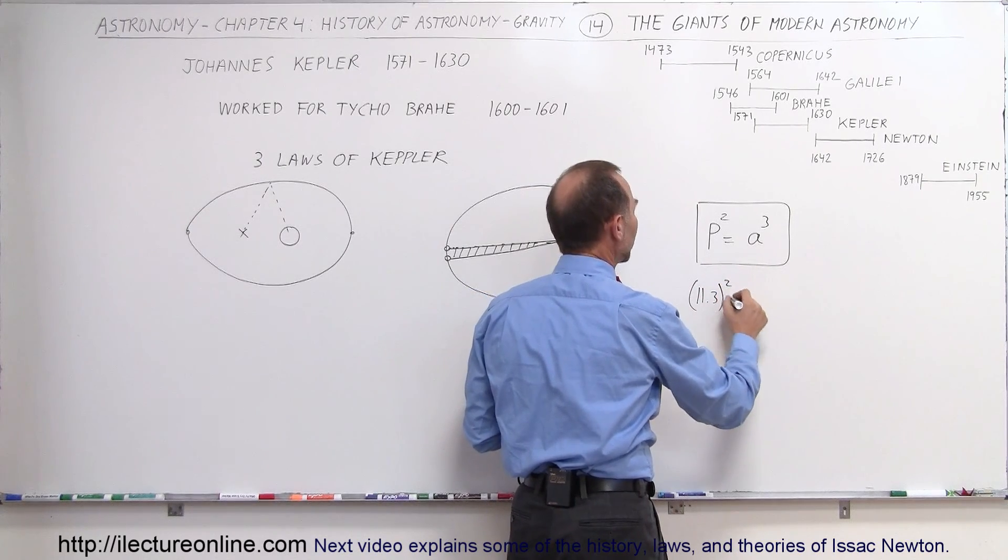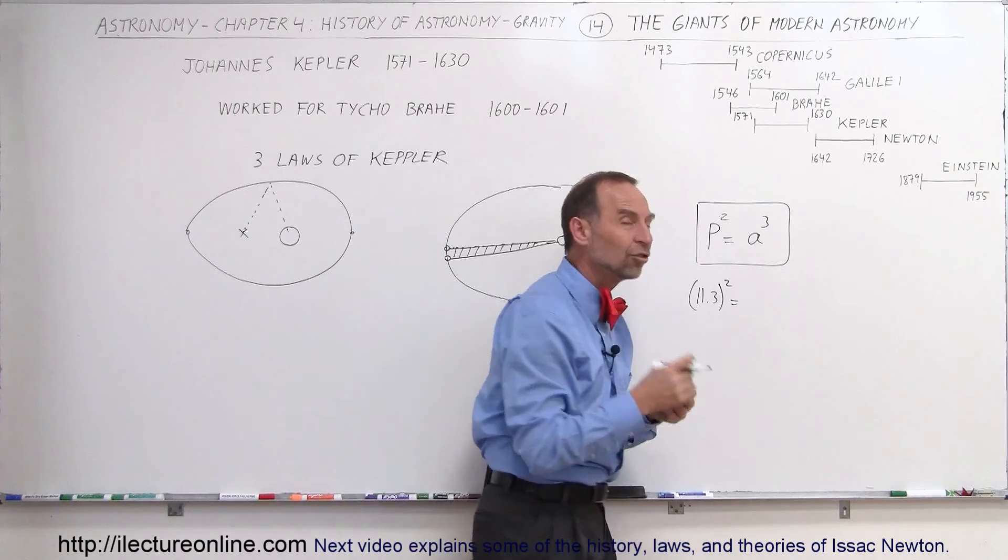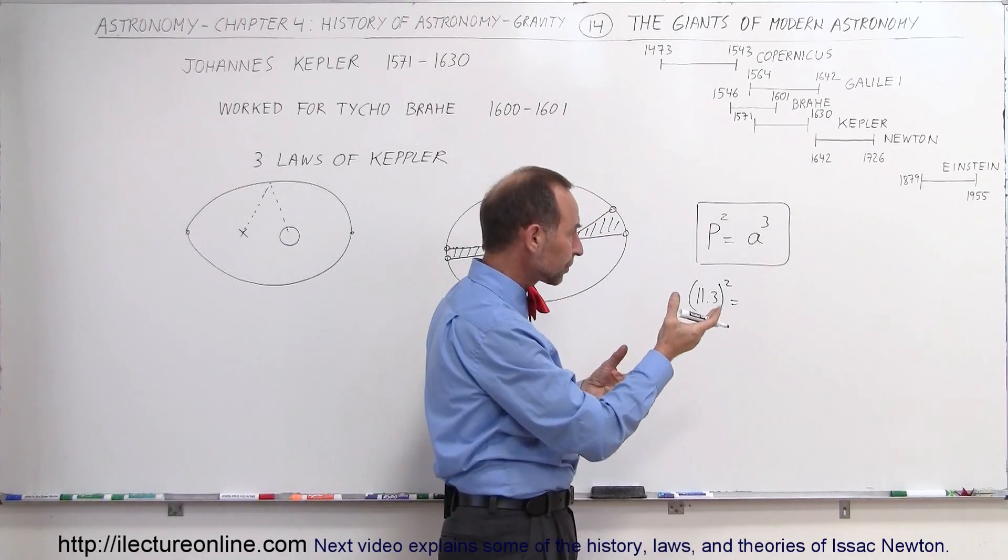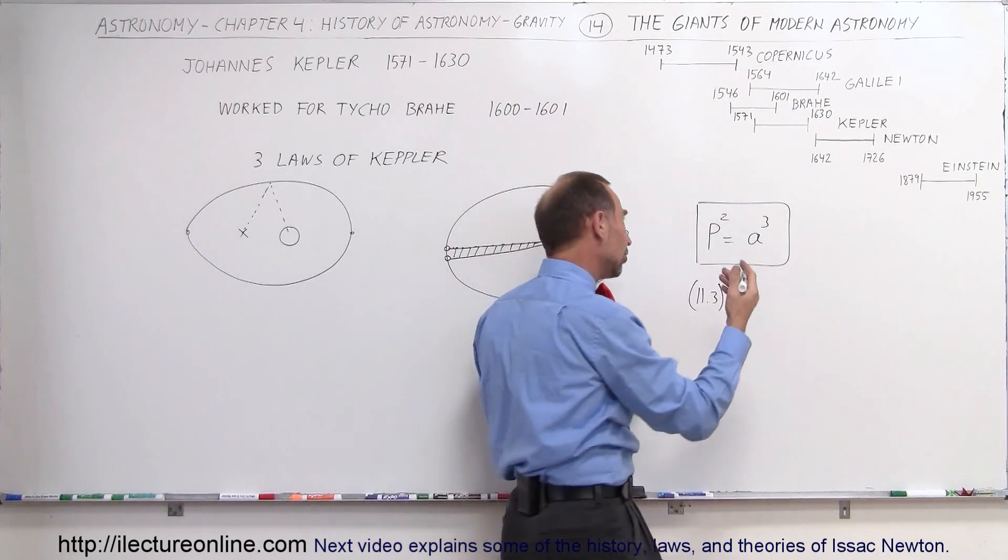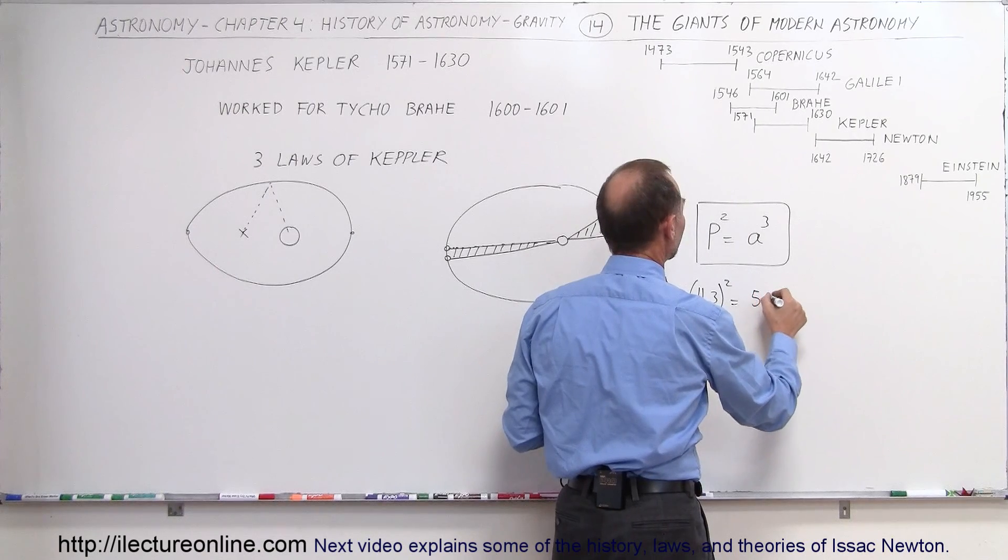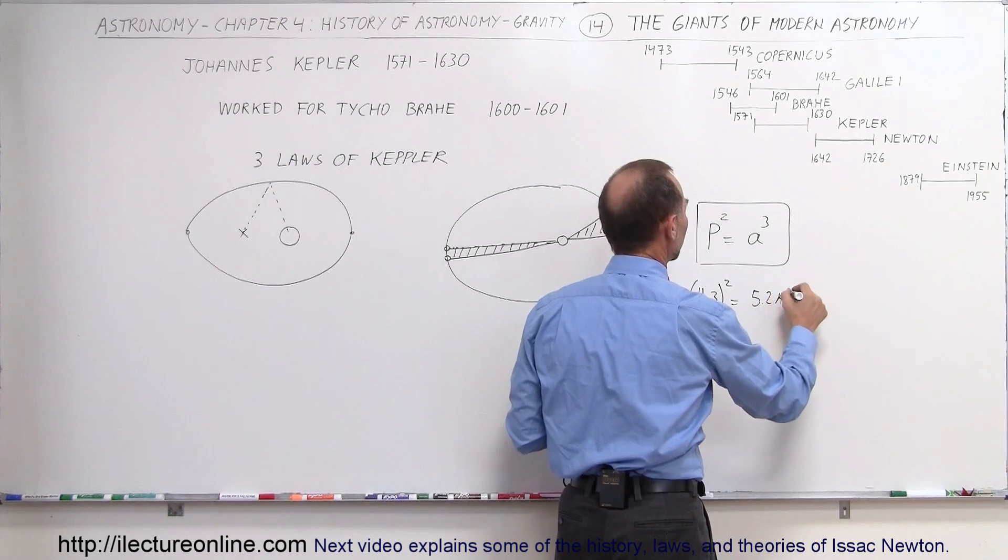Or something like that, if you take that and you square that, that is equal to the average distance between Jupiter and the Sun, which is around, I would say about 5.2 astronomical units, or something like that,